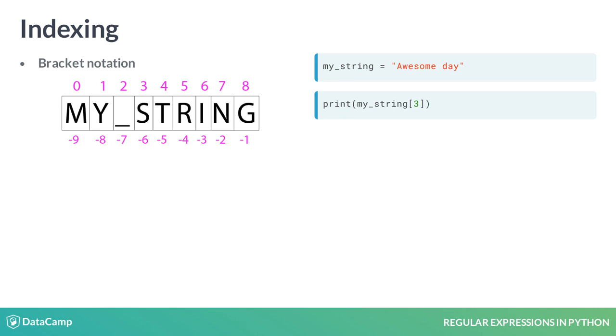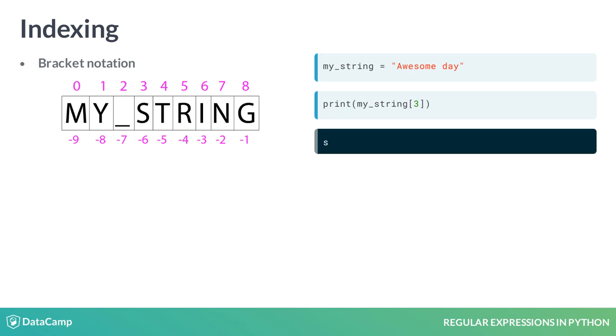Meaning that the first character has index zero, as shown on the slide. For character four, we specify index three, getting the following output.